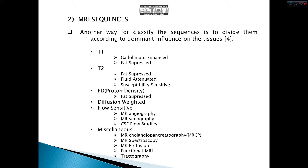If we want to classify sequences with respect to their dominant influence on the tissue, we will see the classification on the screen. There are T1 weighted, T2 weighted, proton density, diffusion weighted, and some other types. These main families also have some subclasses according to applied variations, such as fat suppressed, fluid attenuated, et cetera.